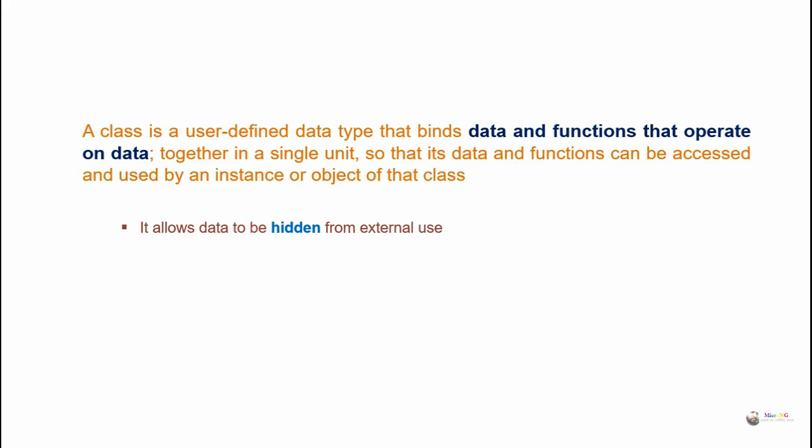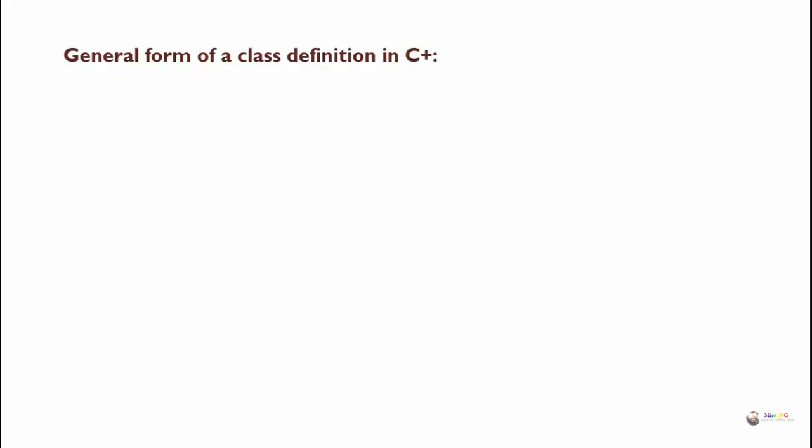It allows data to be hidden from external use. A class needs to be defined before using its instances or objects in a program. The general form of a class definition in C++ starts with the keyword 'class' followed by the class name, and starts and ends with curly braces. Outside the curly braces at the end, we have to include a semicolon.